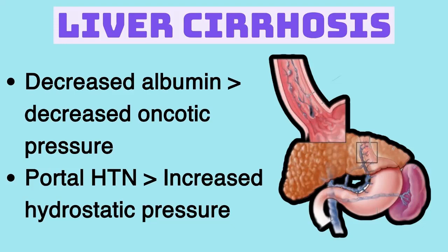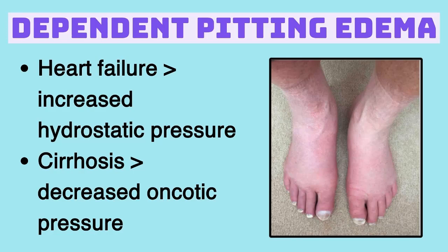For the pitting edema in the legs in cirrhosis, the mechanism is decreased oncotic pressure, not increased hydrostatic pressure. Now compare: if a patient had left heart failure that progressed to right heart failure with dependent pitting edema, that mechanism would be increased hydrostatic pressure, because blood backs up in the venous system behind the failed right heart. So depending on the scenario, the same leg edema has a different mechanism — cirrhosis: decreased oncotic pressure; right heart failure: increased hydrostatic pressure. This is exactly how USMLE Step 1 asks these questions.